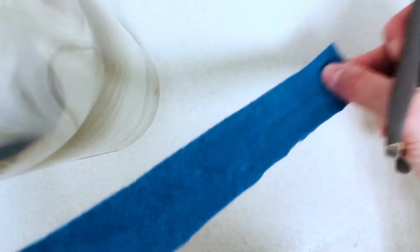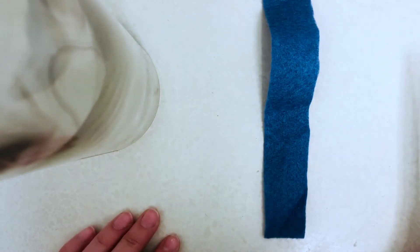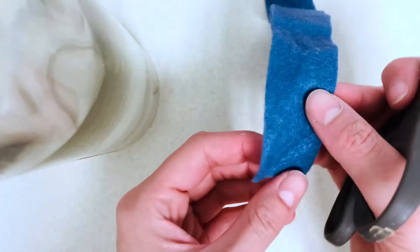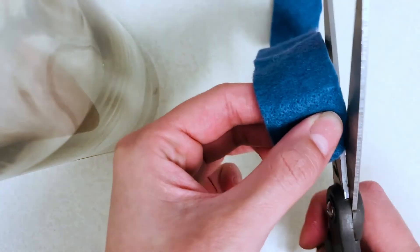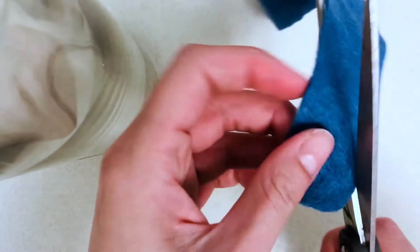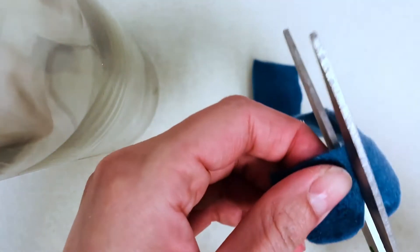After you have your strip you're going to begin making your petal shapes. Start at one end of the felt strip and begin cutting the shapes of petal as you'd like. I'm keeping mine rounded but you can also make them pointy or even use those special scissors with the patterns cut into them to give each petal its own individual shape.